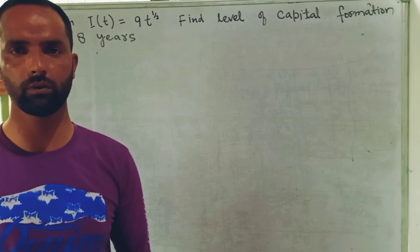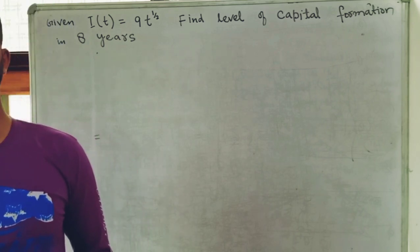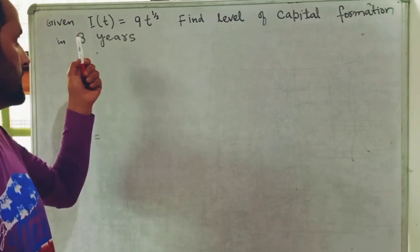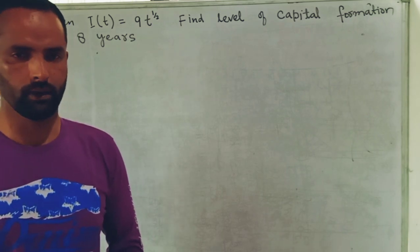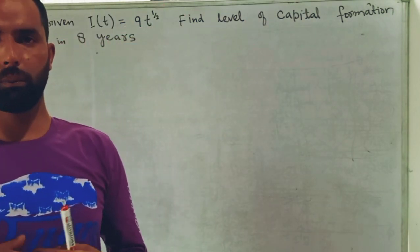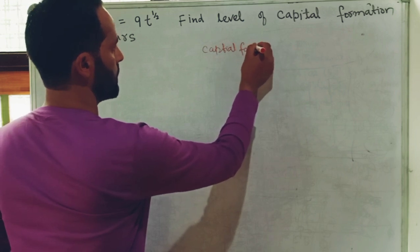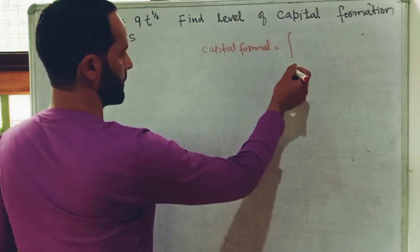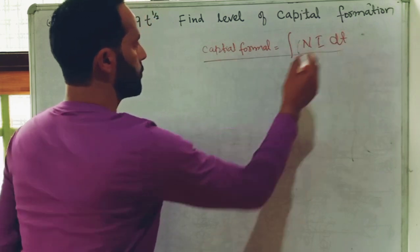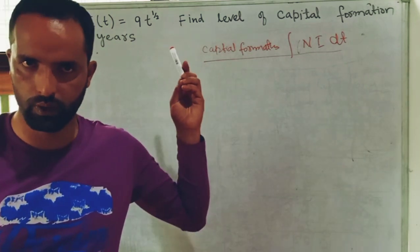We have to find the level of capital formation in eight years from the net investment function. Net investment is the rate of change in the capital stock with respect to time. From the rate of investment, we can find the level of capital formation by the relation that capital formation is equal to the definite integral of the net investment with respect to time.